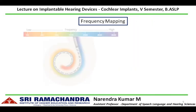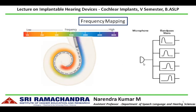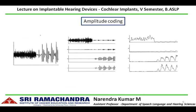Frequency mapping is controlled by the intracochlear electrode array using multi-channel implants. Each electrode contact area has its own bandpass filter, so the microphone picks up the sound energy and splits it into a series of bandpass filters. The output of these bandpass filters is delivered to the cochlea through the appropriate electrode contact area. Low frequencies are mapped to electrode contact regions that reach the apical end of the cochlea, and high frequencies are mapped to the basal end, thereby maintaining the tonotopic organization of the cochlea.